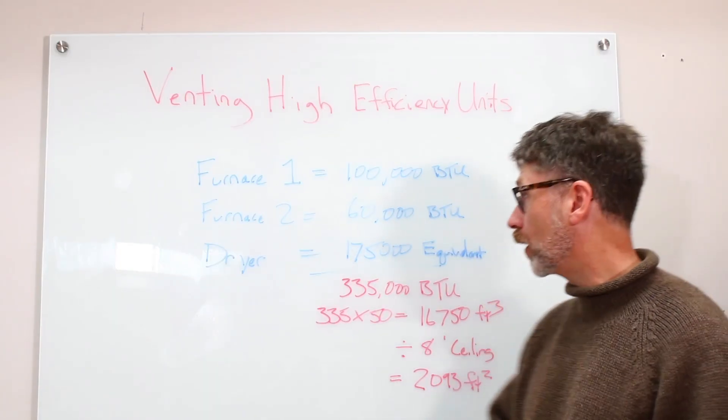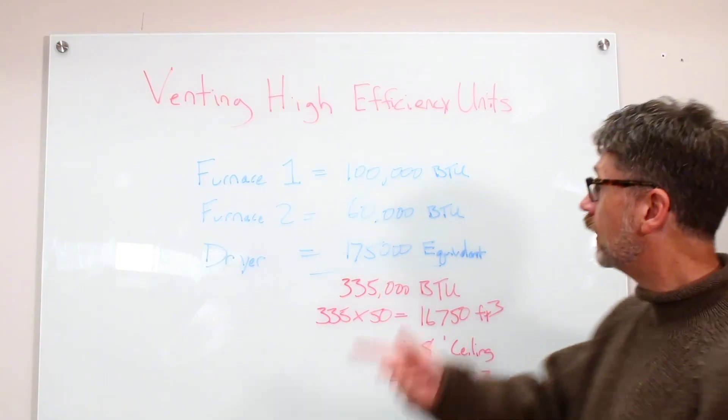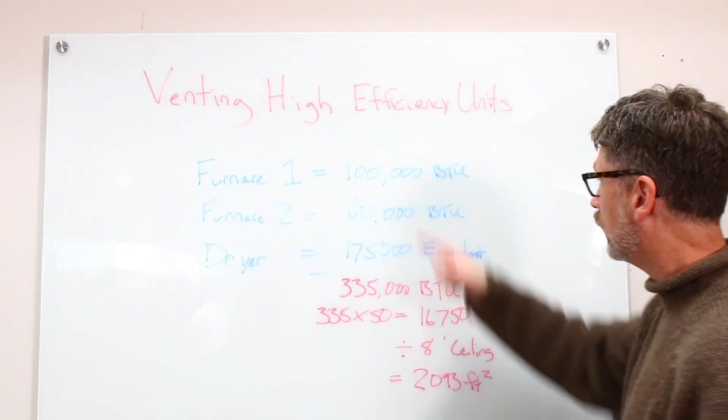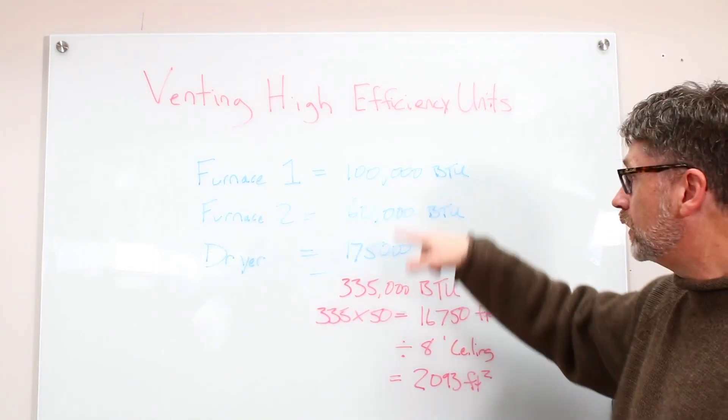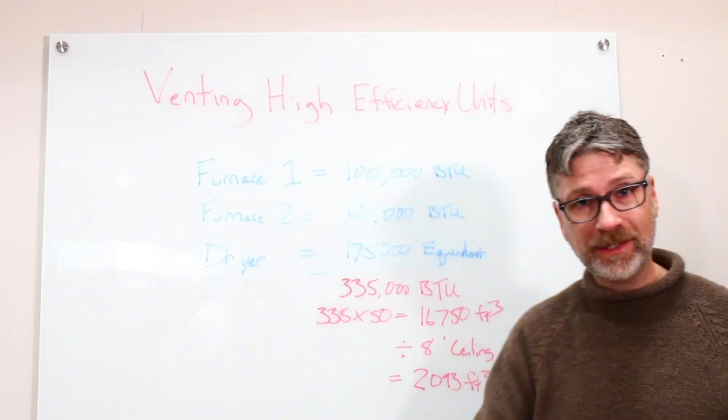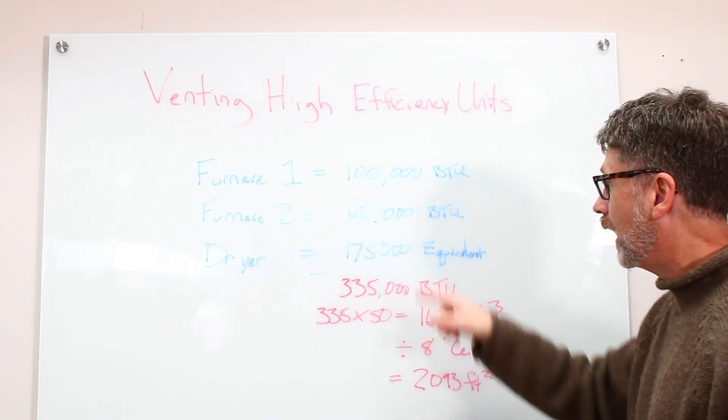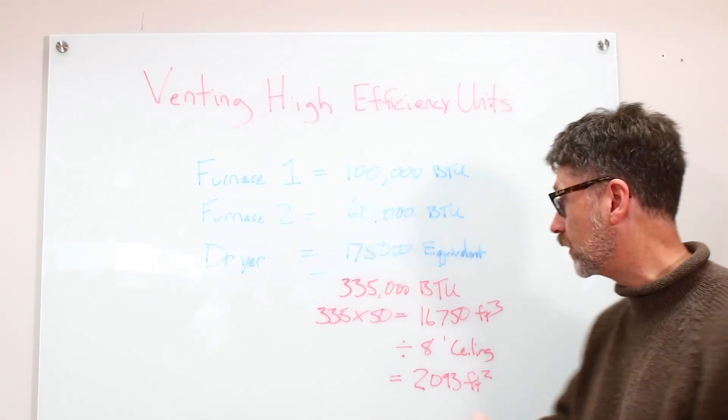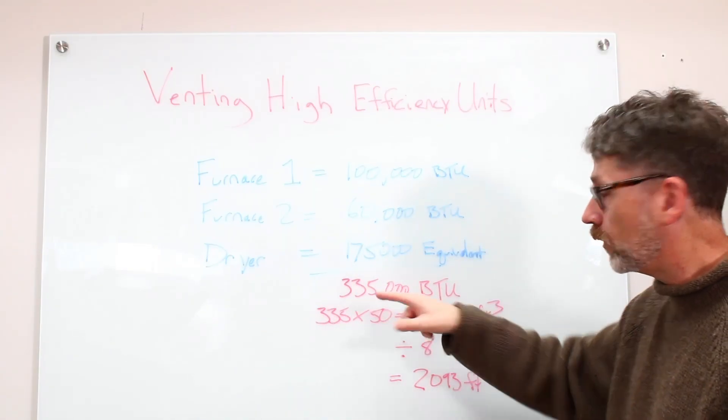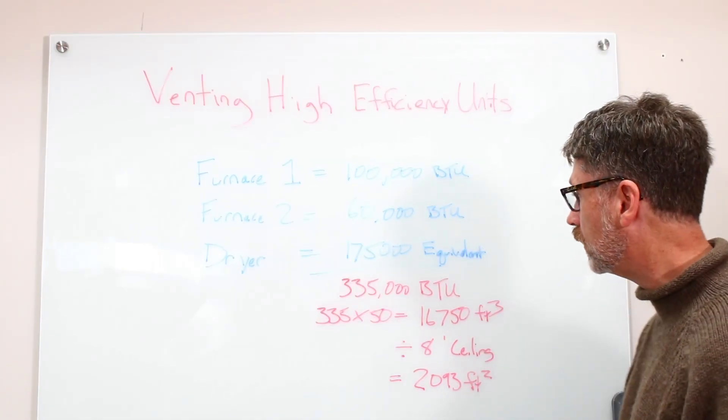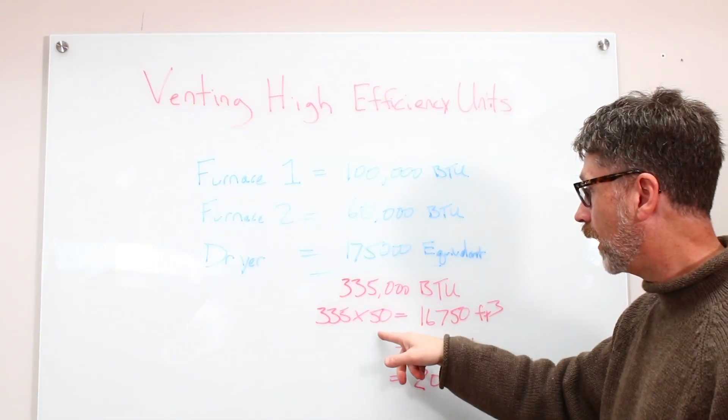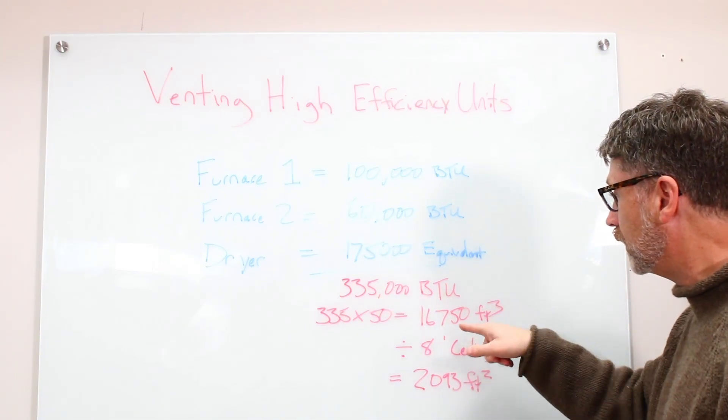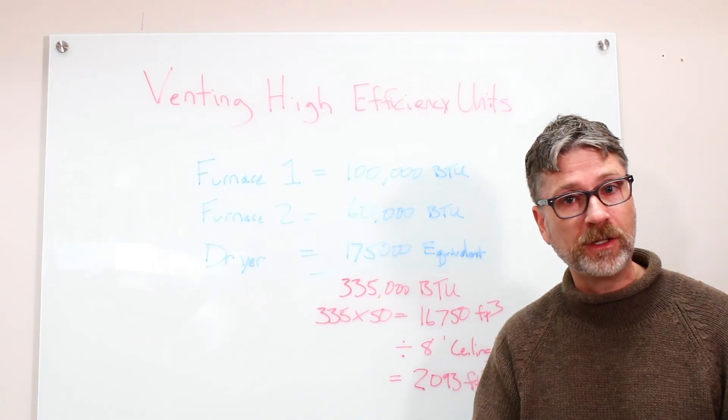Let's do a little math, and I'll show you how that works. I was recently at a home that had two furnaces and a closed dryer in the basement. Furnace number one, 100,000 BTUs. Furnace number two, 60,000 BTUs. And we're using 175,000 BTUs as the equivalent for the dryer for how much air it exhausts. You add that together, we're at 335,000 BTUs.